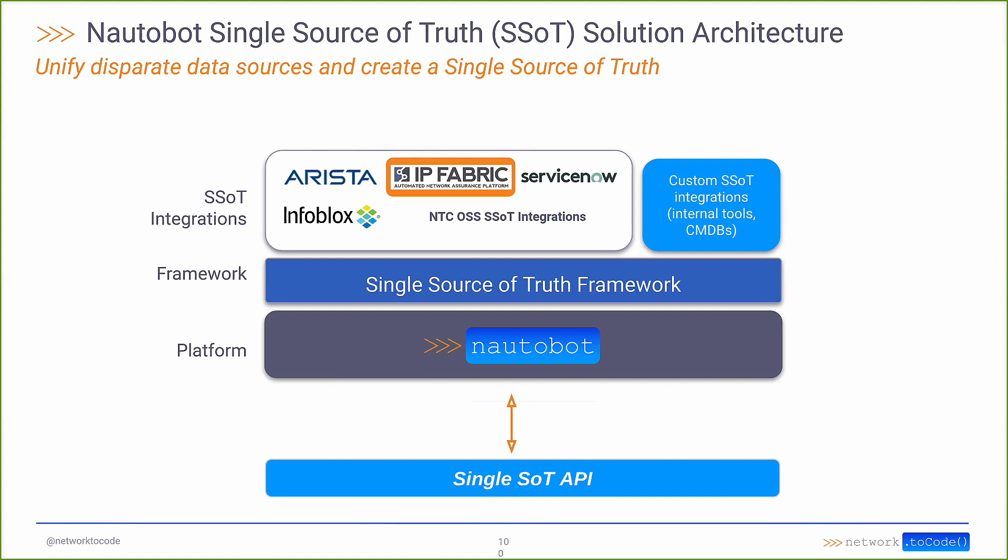In the architecture shown here, there are several different SSoT integrations. This particular instance focuses on IP Fabric, but there are others that are also open source — including Arista, Infoblox, and ServiceNow integrations — which all tie in on top of the Single Source of Truth framework. Eventually all this data can be ingested into NautoBot, and there are also cases where NautoBot can push data back into one of these applications.